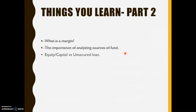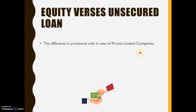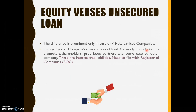Now let's move on to the next topic: equity or capital versus unsecured loan. This difference is prominent only in the case of private limited companies. In case of partnership or proprietorship, there is not much difference. Equity and unsecured loans are different categories only in private limited companies. Equity or capital is the company's own source of funds, generally contributed by the promoters, shareholders, proprietors, partners, and in some cases by other companies as well — a company is permitted to invest in another company. These are interest-free liabilities and must be filed with the Registrar of Companies (ROC) regarding their position of equity and capital.